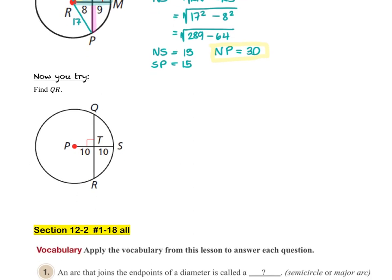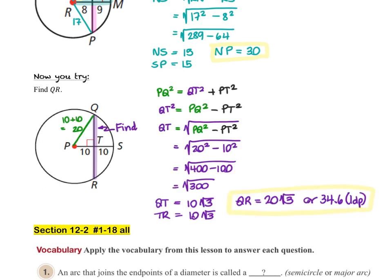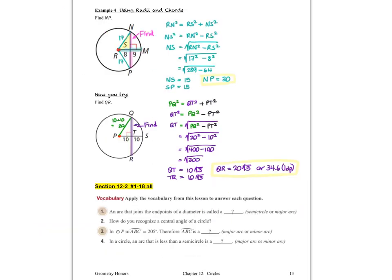Make sure you've assessed what you've got and label your work. For the Now You Try, we did not get a nice round number: the length QR is 20 times the square root of 3, or approximately 34.6 rounded to one decimal place. That is the last problem for this lesson, and you're ready to work on your homework. Anything you had trouble with, please bring it to class. I'll see you back in Lesson 3. Thank you.